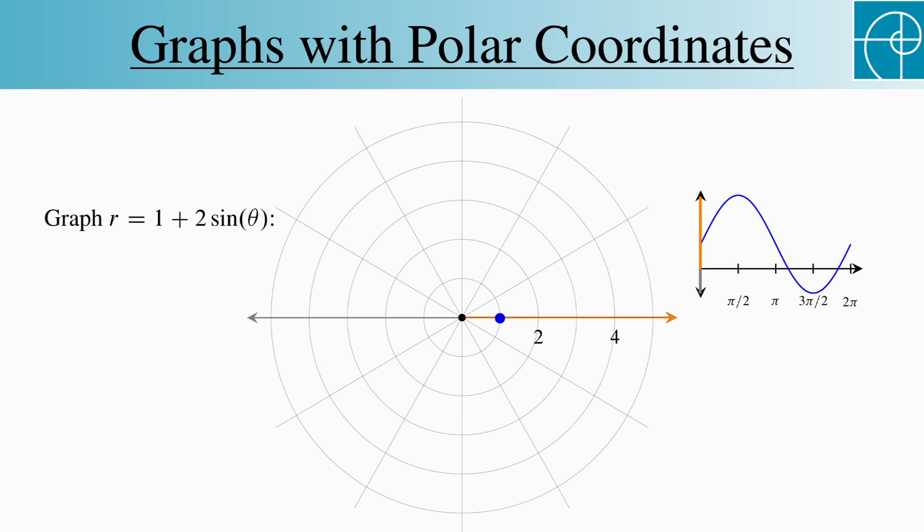The pattern we follow is similar to what we used both times before, though. As theta increases from 0 to pi over 2, r increases from 1 to 3. And then from pi over 2 to pi, it decreases back to 1.